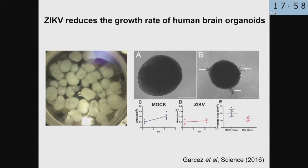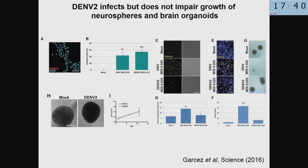When we incubate brain organoids with the Zika virus, we see a reduction in growth of around 30-40% after 11 days. Interestingly, when we use the dengue virus — which is from the same flavivirus family — dengue is able to infect the cells but doesn't kill them or change their growth. This shows it's not an artifact of our model, but specifically caused by the Zika virus when in contact with neuro stem cells.